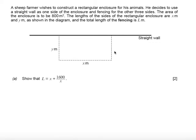In this question we're told a sheep farmer wishes to construct a rectangular enclosure for his animals. He decides to use a straight wall as one side of the enclosure and fencing for the other three sides. The area of the enclosure is to be 800 metres squared. The length of the sides of the rectangular enclosure are x metres and y metres as shown in the diagram, and the total length of the fencing is l metres.